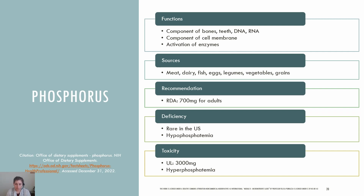Phosphorus is the second most abundant mineral in the human body and is a component of bones, teeth, DNA, and RNA. Phosphorus is also a component of the cell membrane structure in the form of phospholipids and plays a role in the activation of enzymes. Many different types of foods contain phosphorus, including dairy products, meats, poultry, fish, eggs, nuts, legumes, vegetables, and grains. The RDA for phosphorus is 700 milligrams for adults. A deficiency of phosphorus, known as hypophosphatemia, is rare in the U.S. and typically secondary to conditions like DKA, hyperparathyroidism, and kidney tubule defects. There is a UL set for phosphorus at 3,000 milligrams a day, though this is rare in healthy individuals. The UL does not apply to individuals receiving supplemental phosphorus under medical supervision.